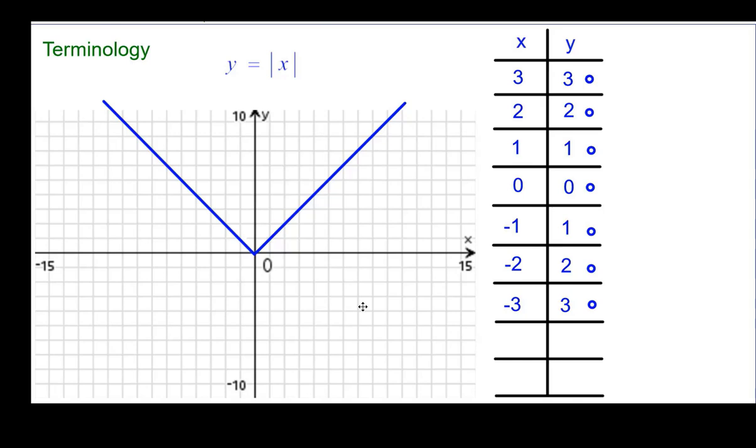So some terminology you should be familiar with. This is the vertex of this parabola at zero, zero. And here is a mirror line, but the proper term is axis of symmetry. And the reason it's called the axis of symmetry is because points on either side are equidistant from this line of symmetry, but in opposite directions.